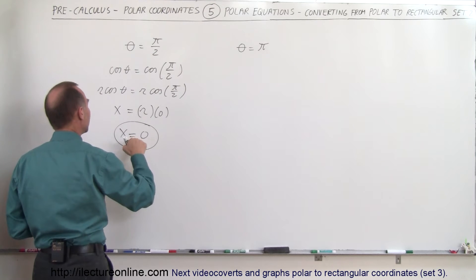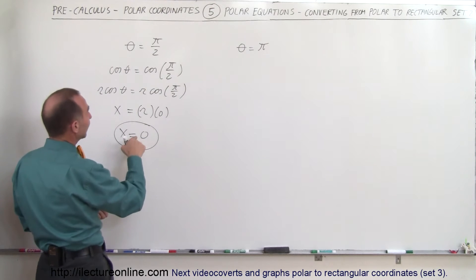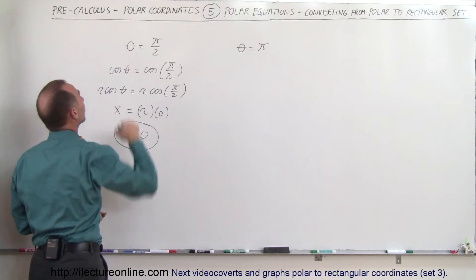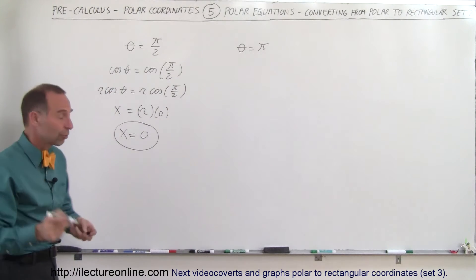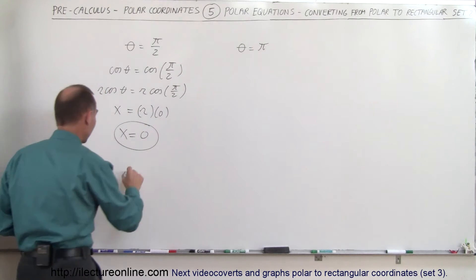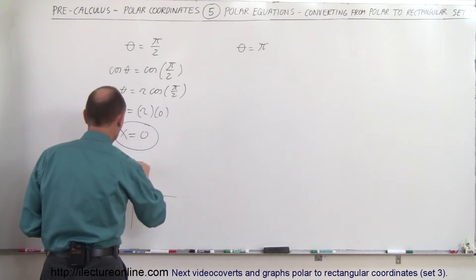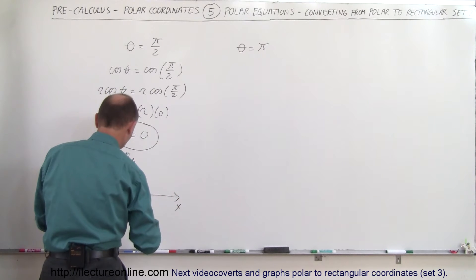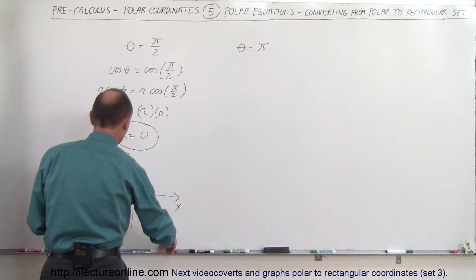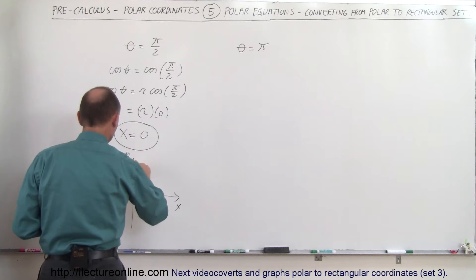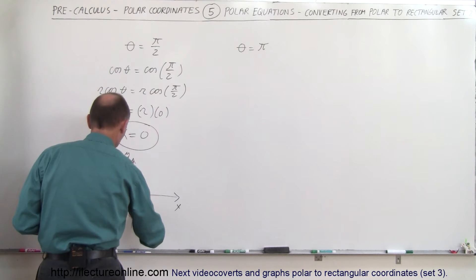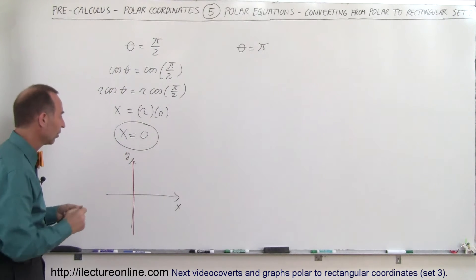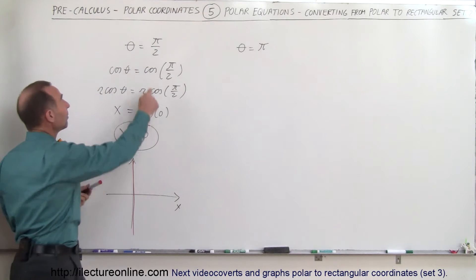This is the rectangular equivalent of theta equals pi over 2. If we graph that on the xy-axis — there's my y-axis, there's my x-axis — when x equals 0, that means it's a line right on top of the y-axis.